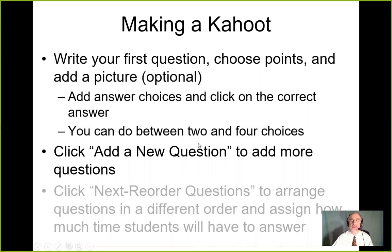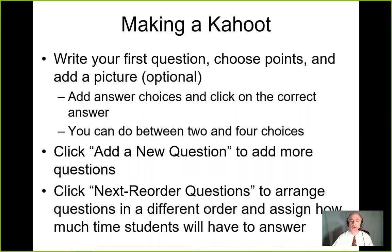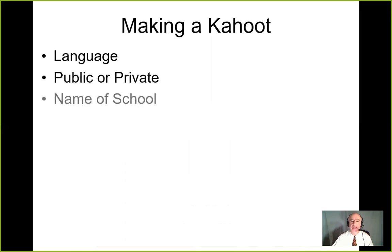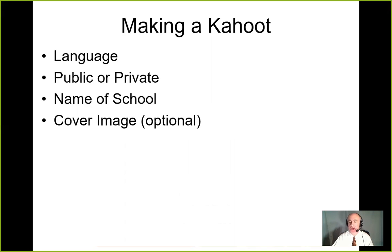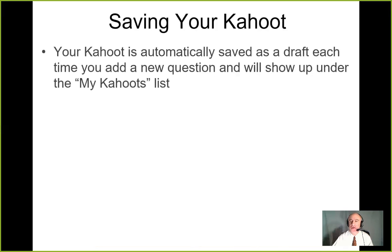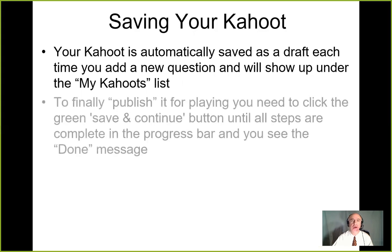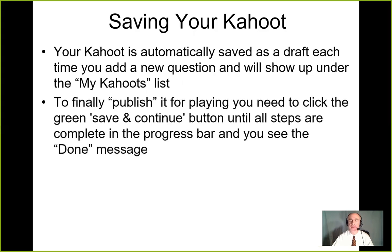Click 'Add new question' to add more questions. You can reorder questions to arrange them in a different order and assign how much time students will have to answer. You can also assign a language, make your Kahoots public or private, add your school name, and optionally add a cover image. Hit done — your Kahoot is automatically saved as a draft each time you add a new question and will show up under the My Kahoots list.